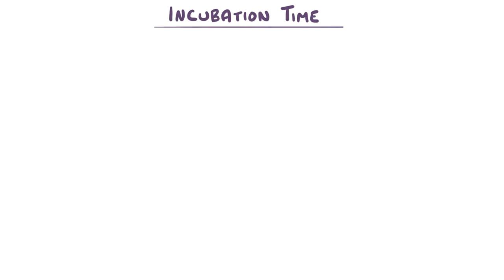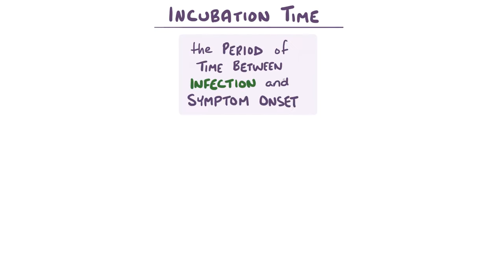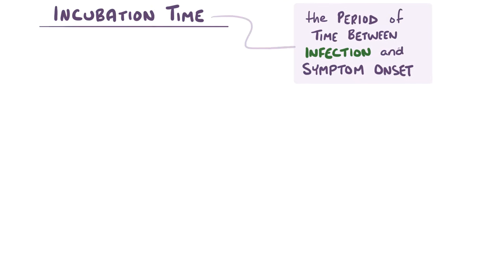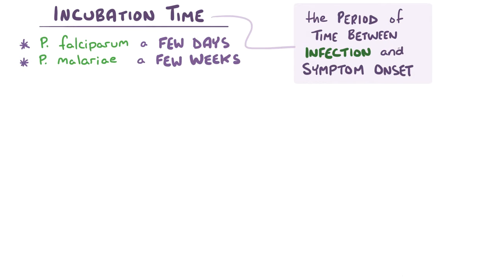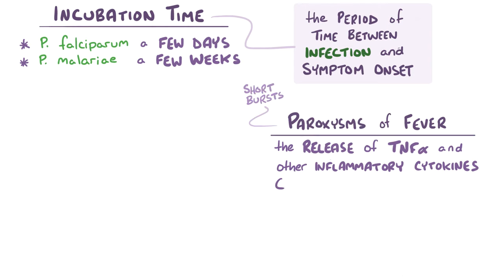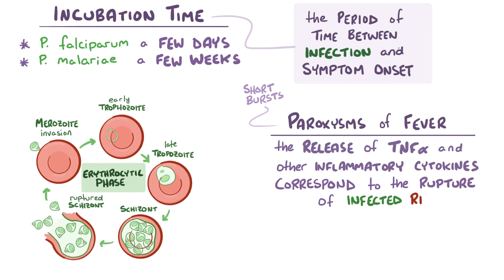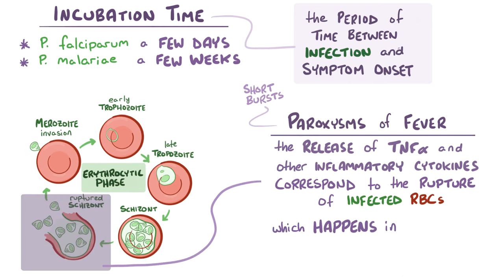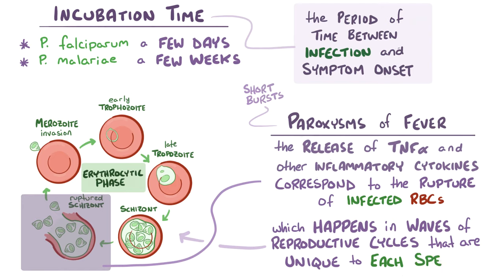The incubation time — the period between infection and symptom onset — varies depending on the plasmodium species. Plasmodium falciparum incubates for a few days, whereas Plasmodium malariae incubates for a few weeks. The release of tumor necrosis factor alpha and other inflammatory cytokines causes fevers that typically happen in paroxysms, or short bursts, and correspond to the rupture of infected red blood cells, which happens in waves of reproductive cycles unique for each plasmodium species.